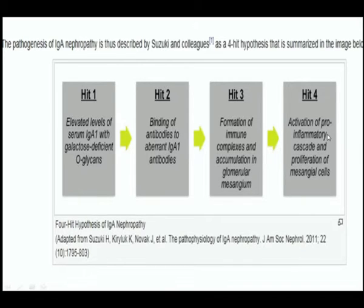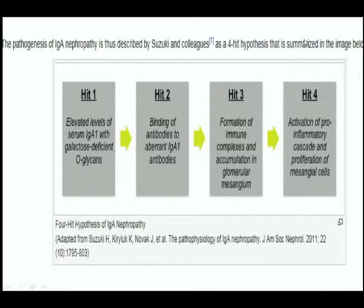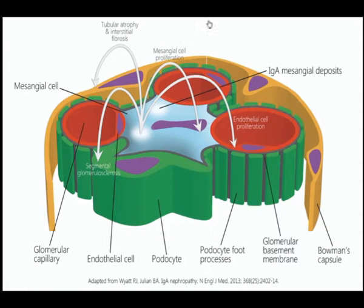Finally, Hit-4 involves activation of the inflammatory cascade and proliferation of the mesangium, which leads to various forms of glomerular injury — it may be RPGN, focal segmental glomerulosclerosis (FSGS), MPGN, or other pathogenetic features.